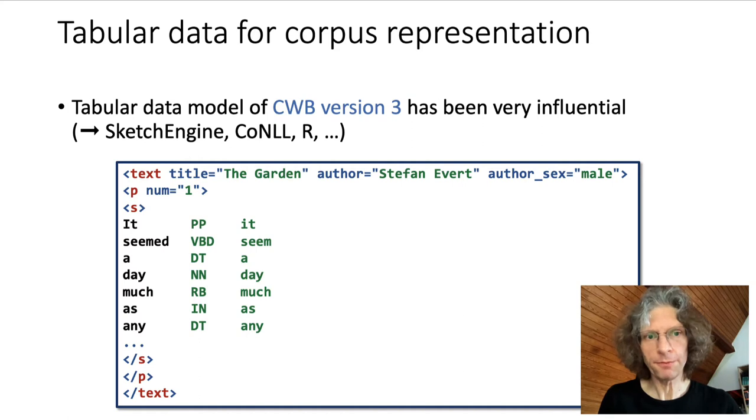To understand where we're coming from, let's take a quick look at the tabular data model of CWB version 3. This is a very influential format, which is also used as the input format for Sketch Engine and is similar to the CoNLL file formats that are popular in natural language processing.